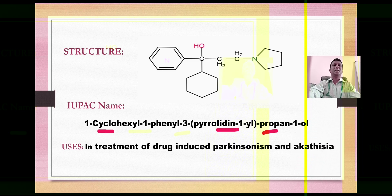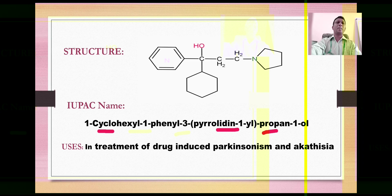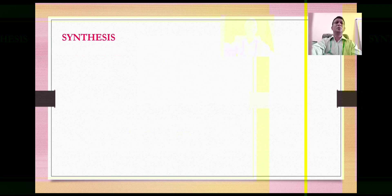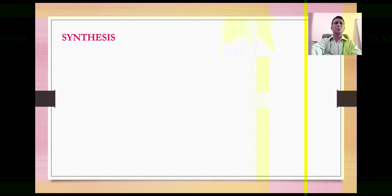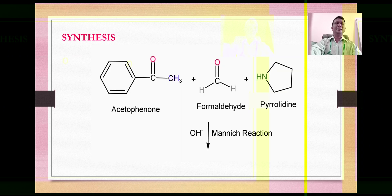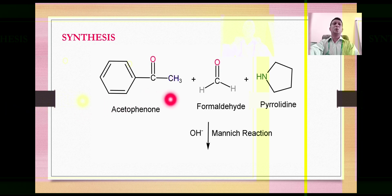Let's look at synthesis of this compound. The synthesis starts with a three-component reaction, a very familiar reaction known as Mannich reaction, where a ketone, formaldehyde, and secondary amine condense together. In this case we started with acetophenone, formaldehyde, and pyrrolidine as secondary amine.